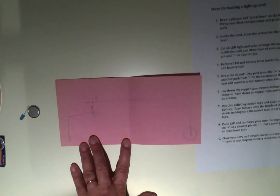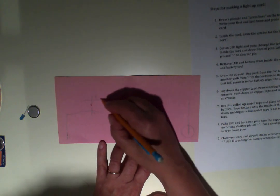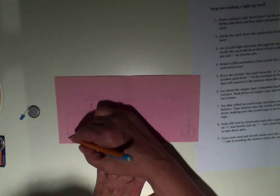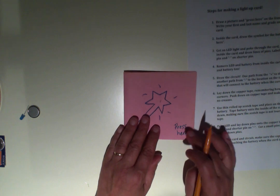The way the circuit works is it's going to come like this, go through the battery, and then when it's closed, when these two are touching, that'll close the circuit.